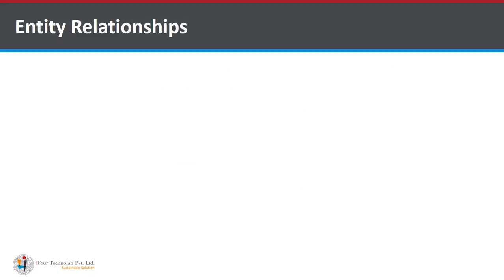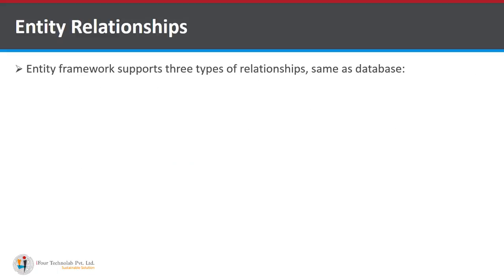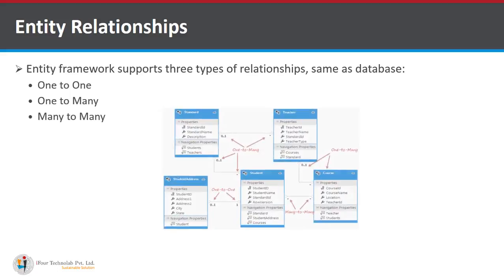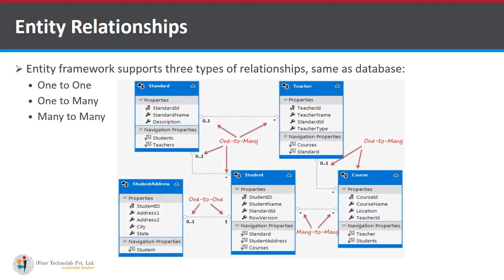Next is Entity Relationships. Entity Framework supports three types of relationships, the same as in databases: one-to-one, one-to-many, and many-to-many. For example, there are tables Standard, Teacher, StudentAddress, Student, and Course. There is a one-to-many relationship between Student and Teacher/Standard, a one-to-one relationship between Student and StudentAddress, a one-to-many relationship between Teacher and Course, and a many-to-many relationship between Student and Courses.